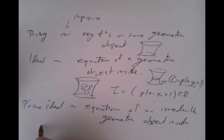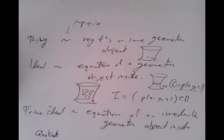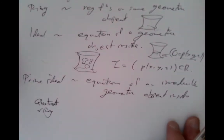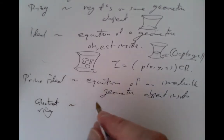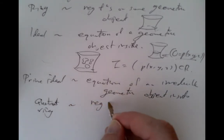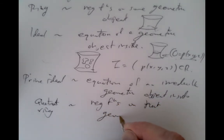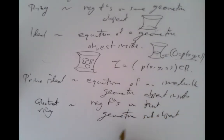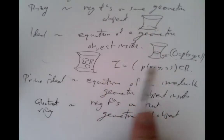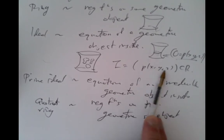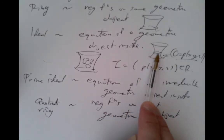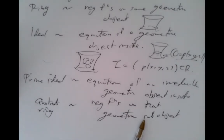The idea of a quotient ring of a ring by an ideal is, roughly speaking for a prime ideal, something like thinking about the regular functions on that geometric sub-object. We have some geometric object like a surface, on it a curve cut out by some equation generating an ideal, and the regular functions on that curve are also a ring — and that's our quotient ring.